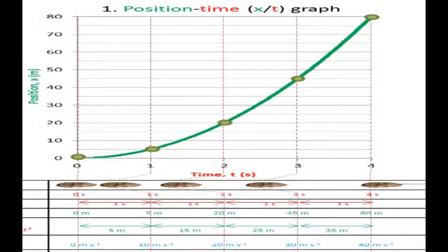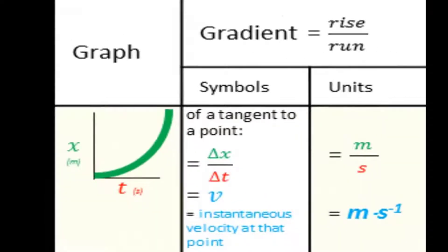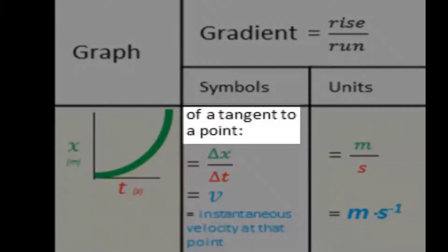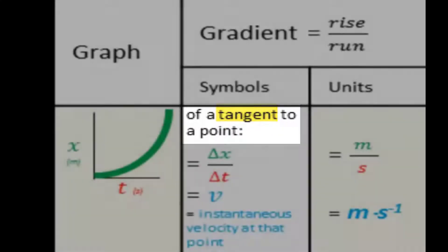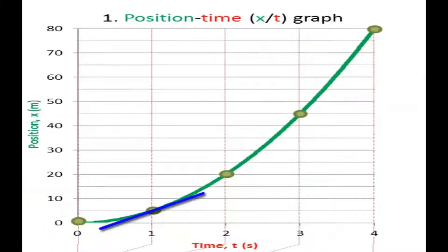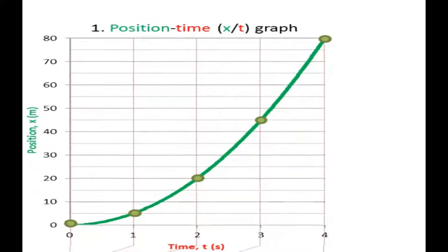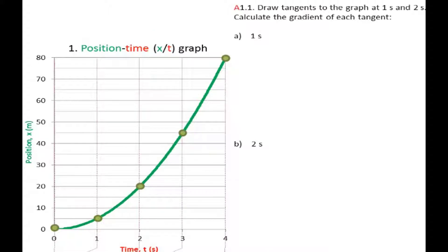Because the graph is curved, there isn't one answer if we ask what is the gradient of the graph. It depends which point we are referring to. If we want to find the gradient for a particular point, we have to draw a tangent to that point. A tangent is a line which only just touches that one point that we're interested in. Let's draw tangents to the graph at one second and two seconds and get the gradient of these tangents.